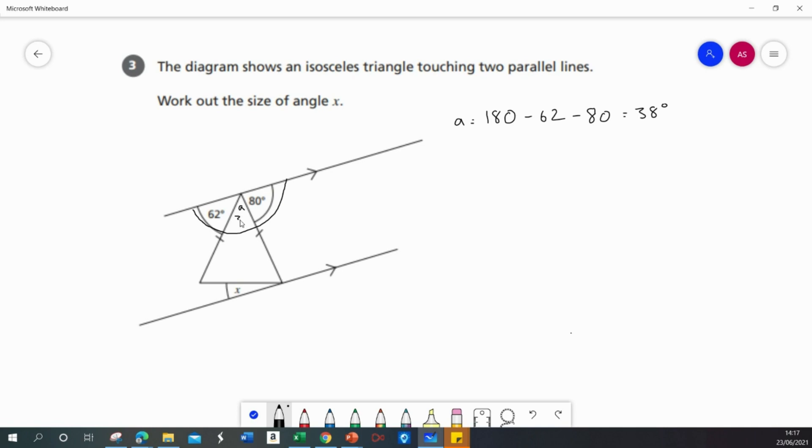So if angle A is 38 degrees and I know that this is an isosceles triangle, then these two angles at the bottom, these base angles, will be the same.